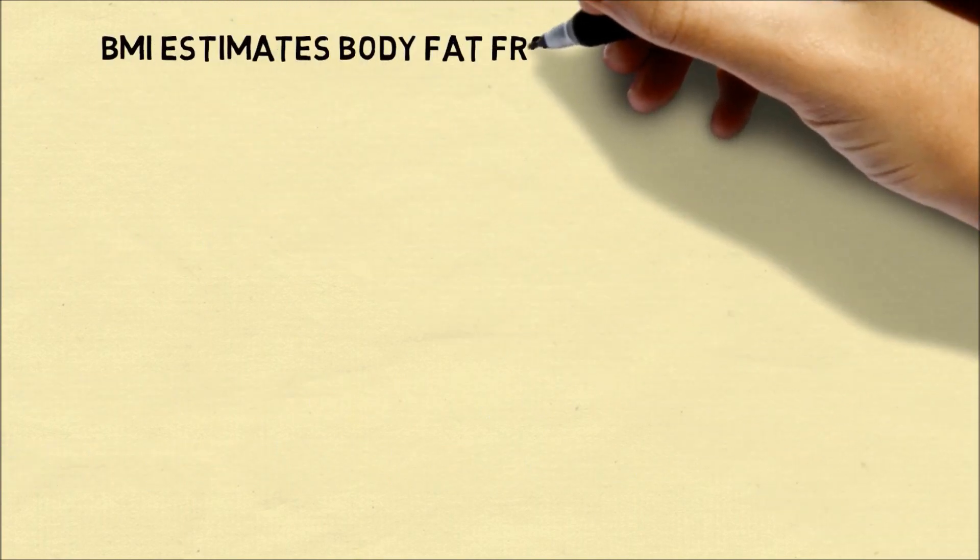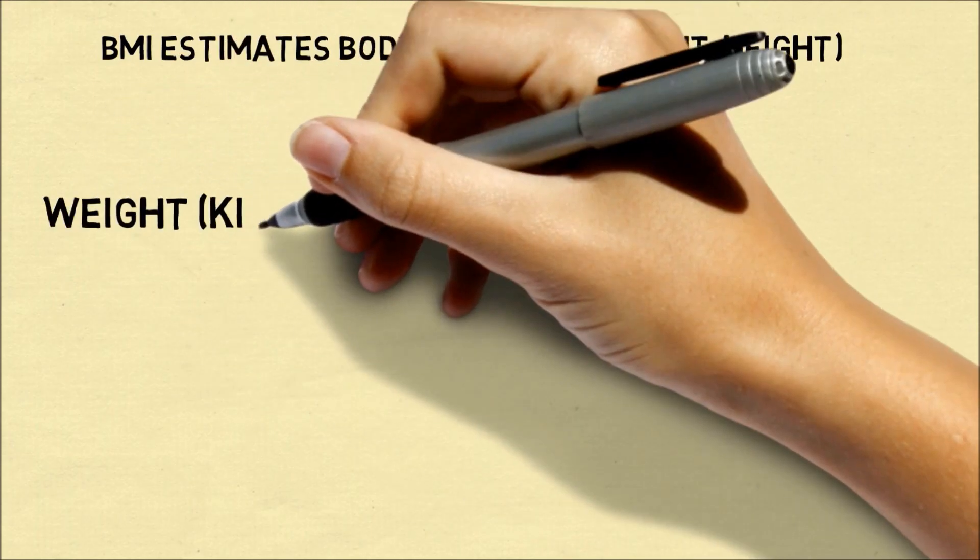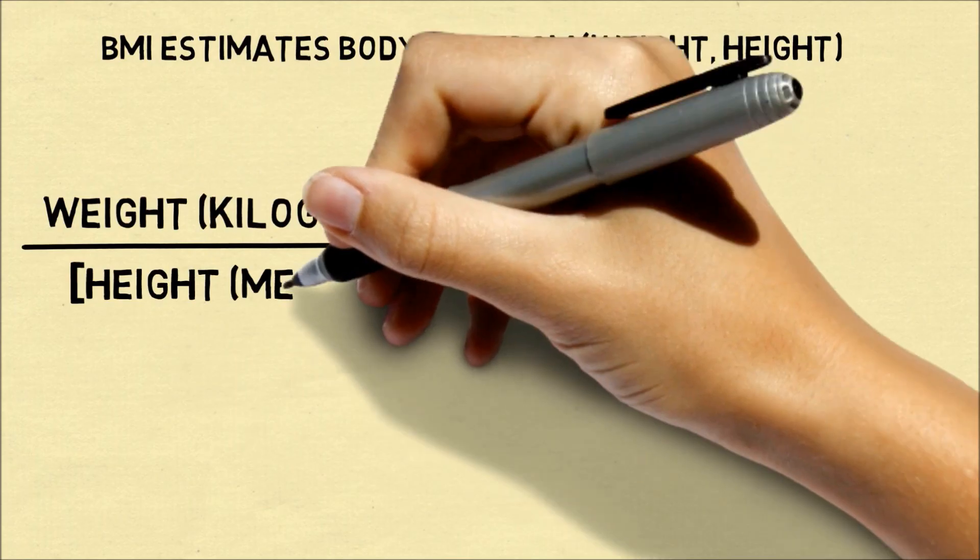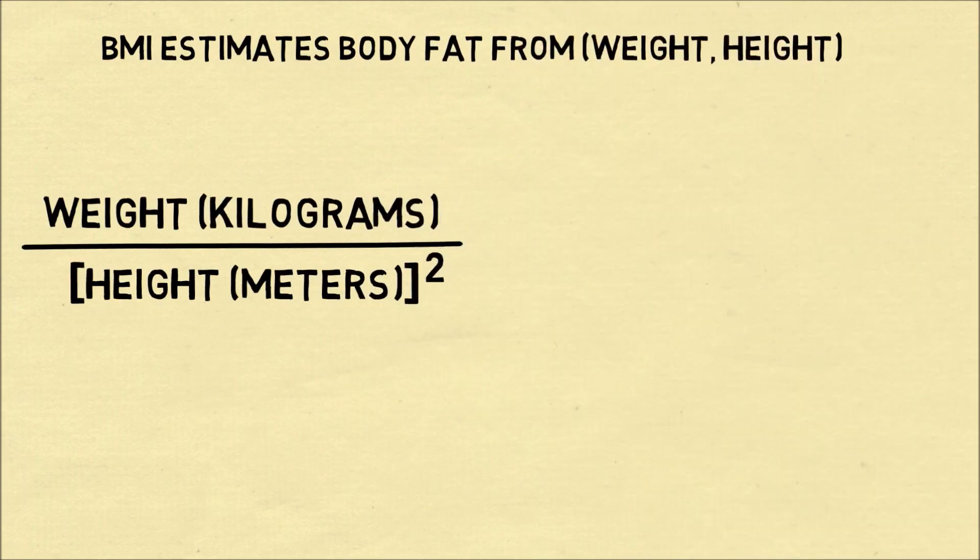BMI is a way to estimate body fat from the two variables of weight and height. One way is to divide your weight in kilograms by your height in meters and square it.